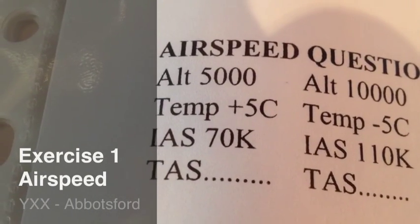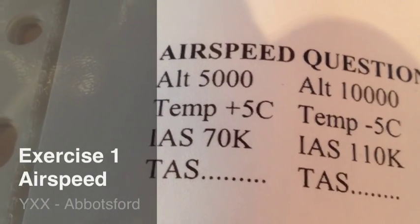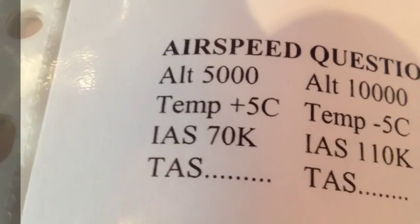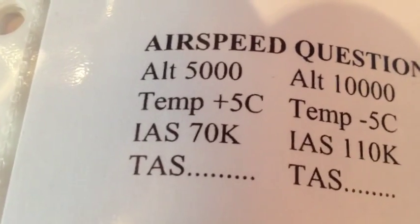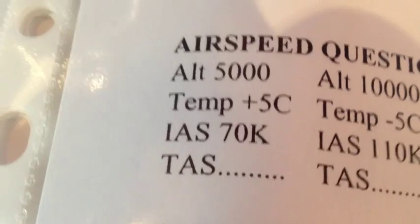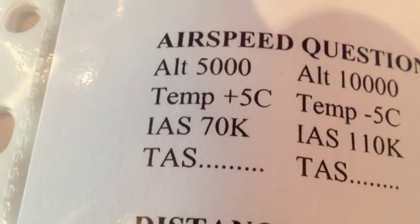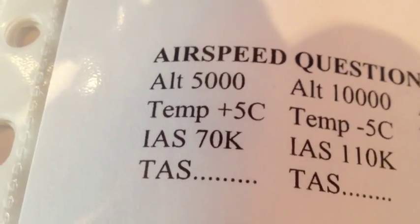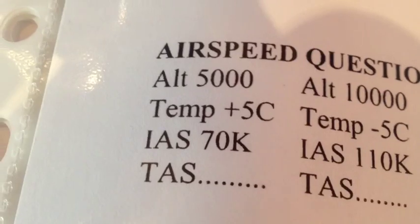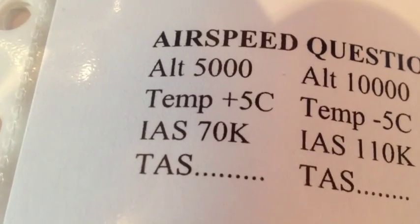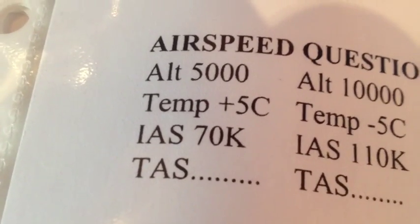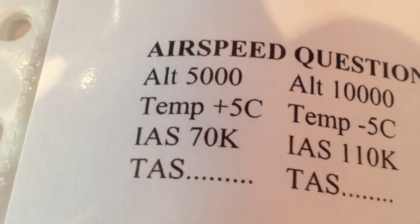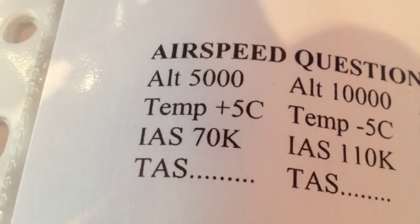The first group of questions involves airspeed calculations using true airspeed — finding true airspeed from indicated, or finding indicated from true, using temperature and pressure altitude. We're going to take a look at these and I'll show you the solution on the E6B flight computer. These are computer exercises number one, and this is the airspeed questions.